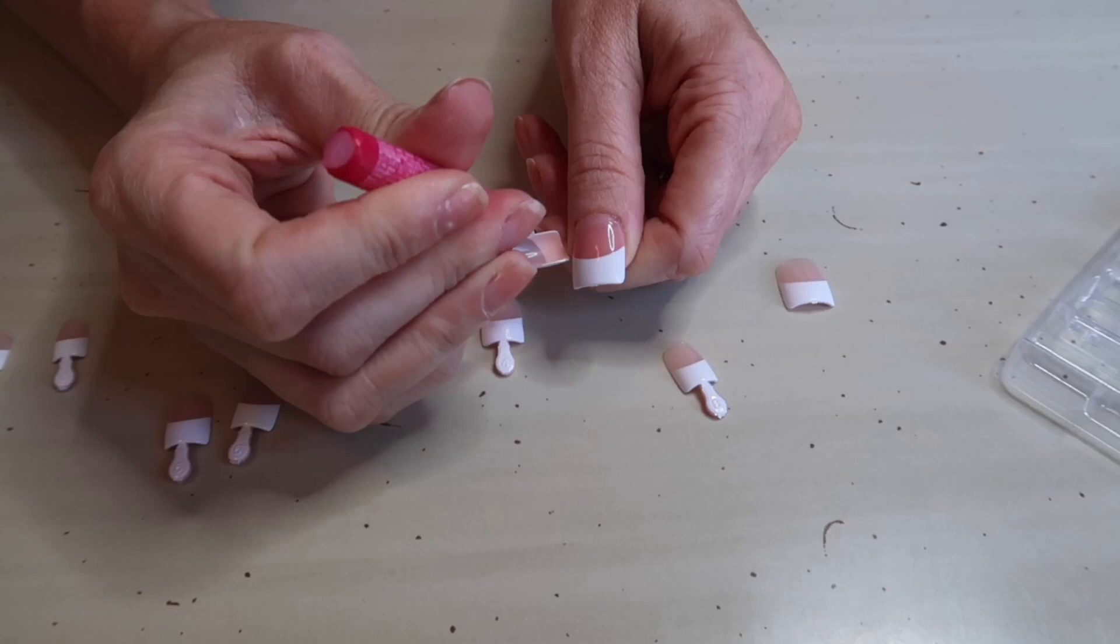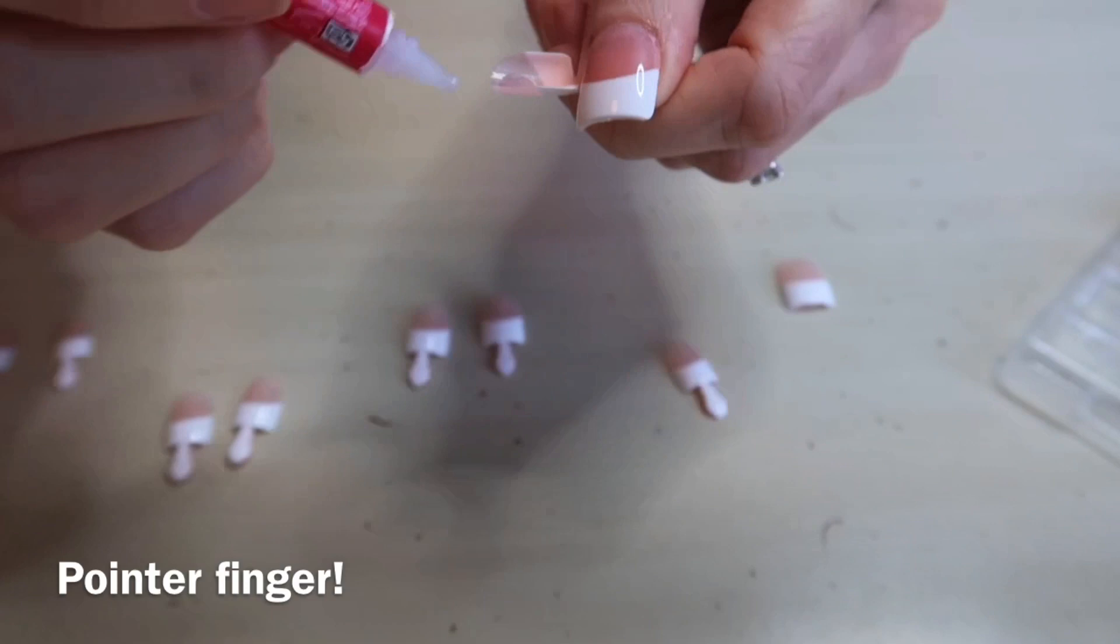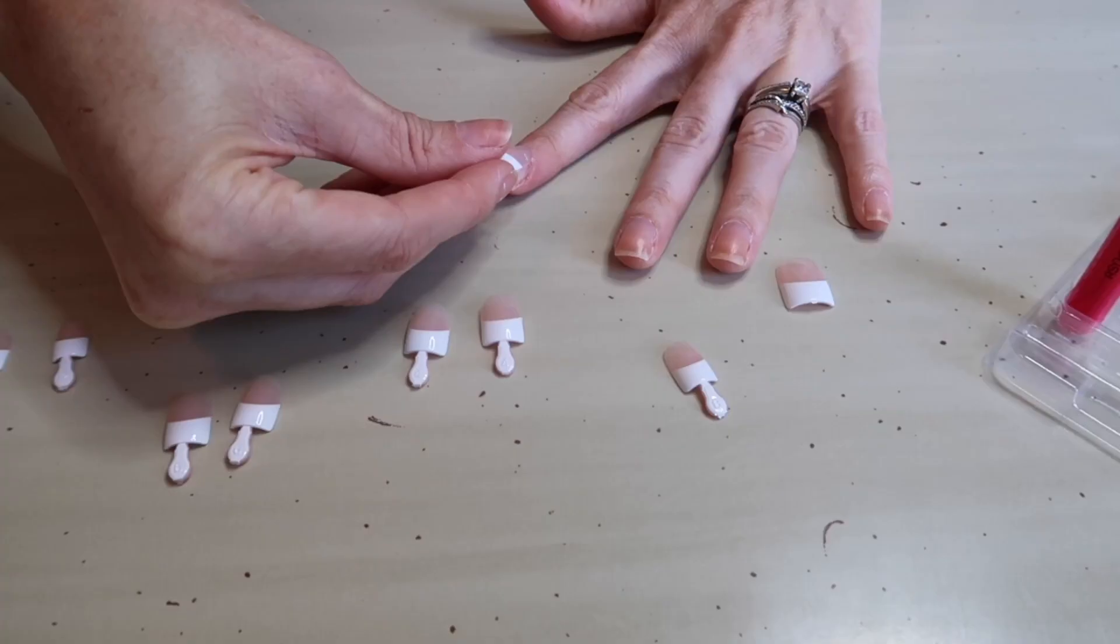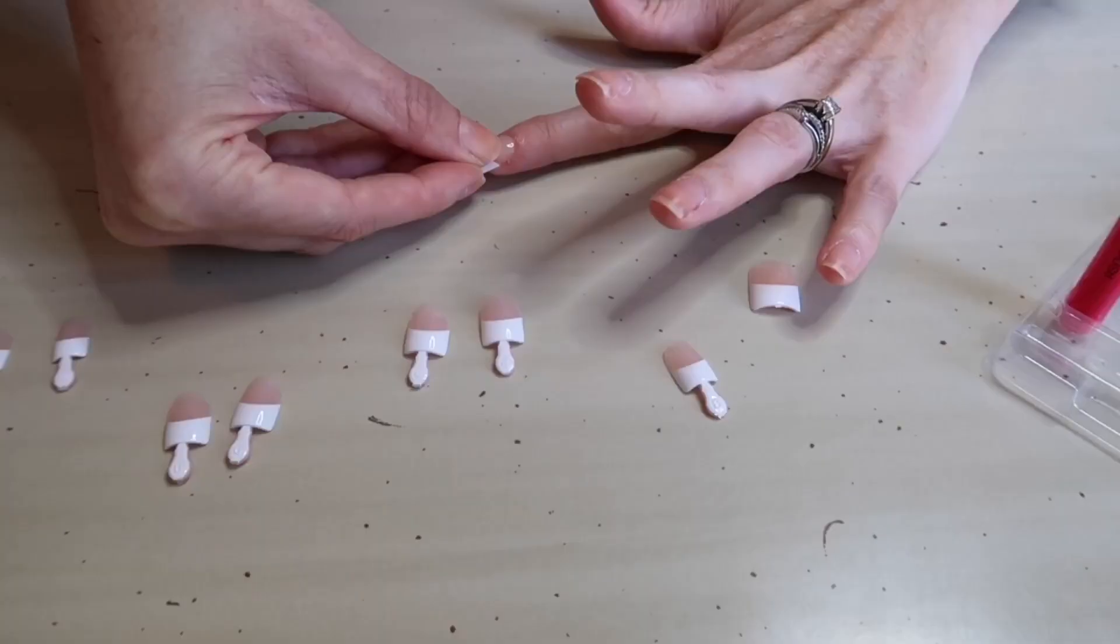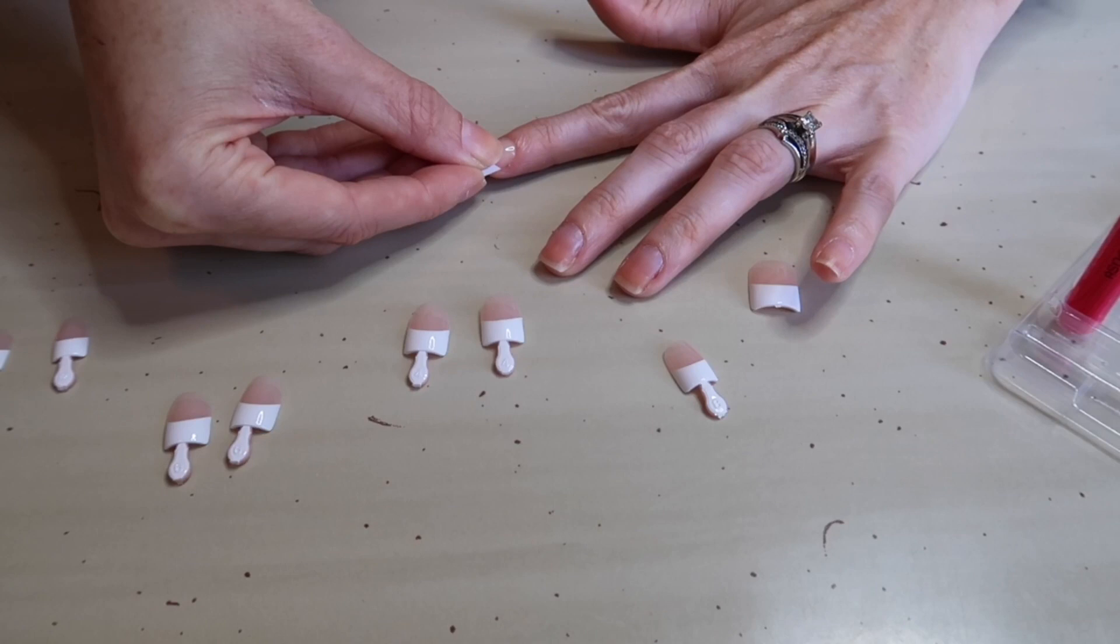So we're going to go ahead and do the ring finger, put a generous amount of glue, make sure you swipe it up to the sides and the very end and then you're going to angle it, placing it first at your cuticle and then laying it down flat. You're going to want to hold them. You can hold them for about five seconds if you want. I do 10 just to be on the safe side and that is it.